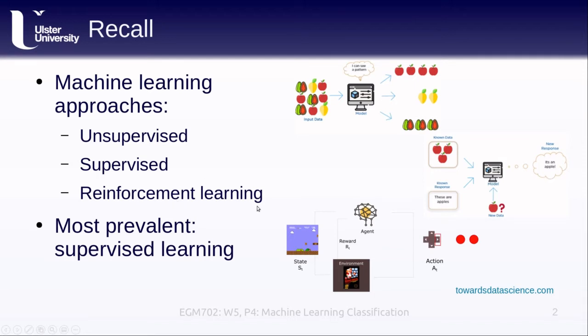And finally, reinforcement learning, where depending on the outcomes or actions that the machine learning algorithm takes, we reward it or punish it based on whether the action helps it achieve whatever goal we have in place.